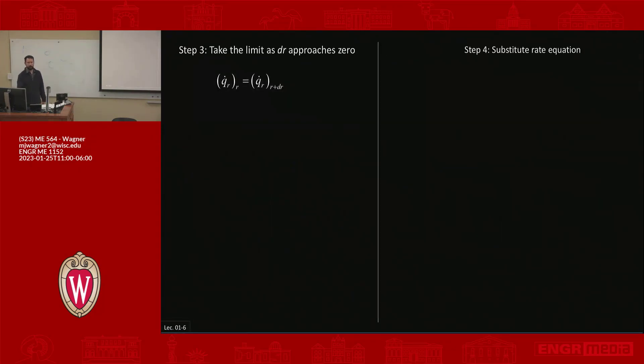So we'll try to get through one more step here before we wrap up. So steps three and four, we're going to take the limit as DR approaches zero, and then we're going to substitute the rate equation. So let's just move through this because I think it's mostly review. So our limit as DR approaches zero uses its definition. So that is DQ dot R DR is equal to the limit as DR goes to zero, Q dot R plus DR minus Q dot R over DR. So we'll use this definition, assuming the whole time that DR is vanishingly small. It's going to zero, but we can still do algebra using this equation. So let's solve this equation for Q dot R plus DR.